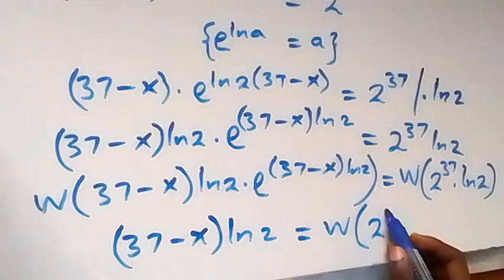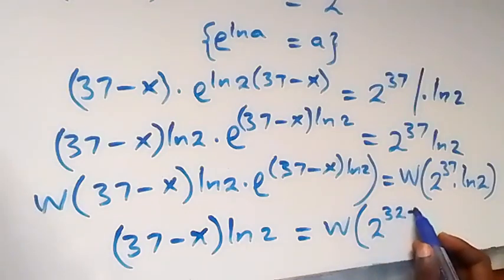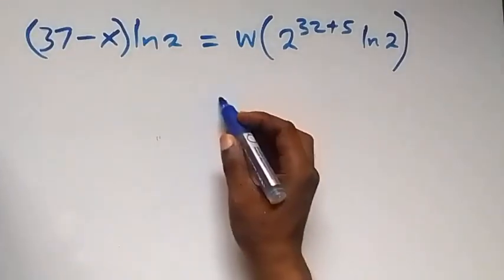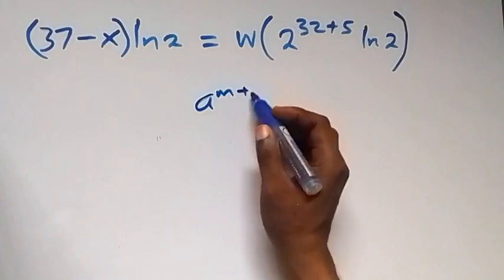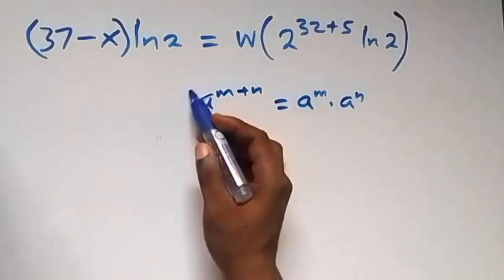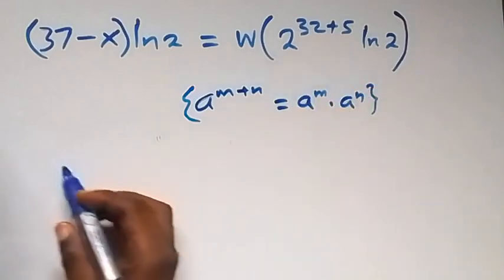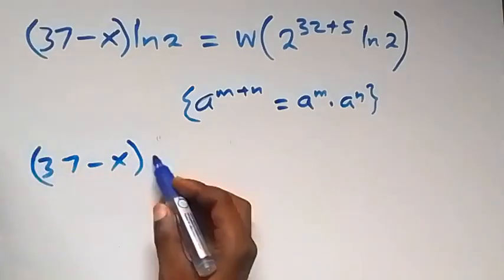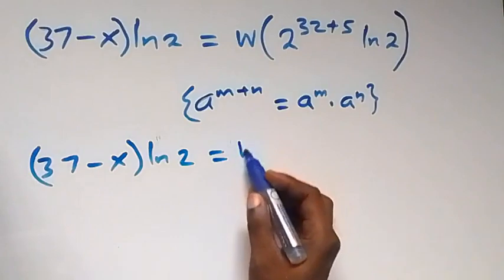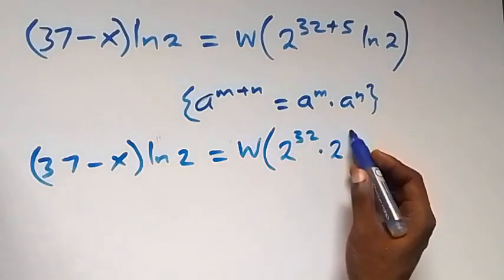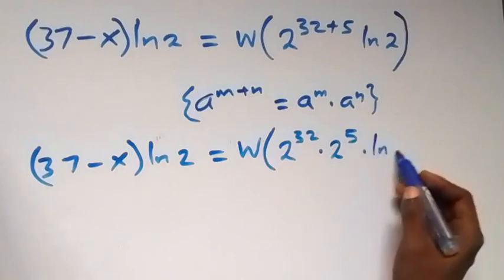Let's write 37 as 32 plus 5, then times ln 2. Following the law of indices, a raised to power n plus m equals a raised to power n times a raised to power m. Applying this, we can separate this and get 37 minus x times ln 2 equals W of 2 raised to power 32 times 2 raised to power 5, then times ln 2.